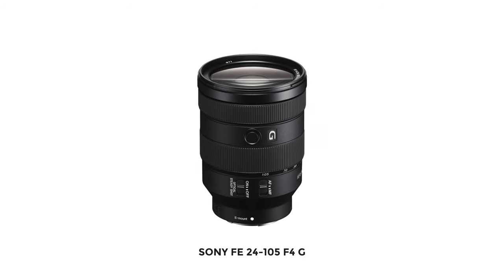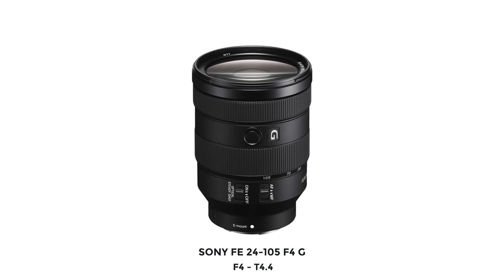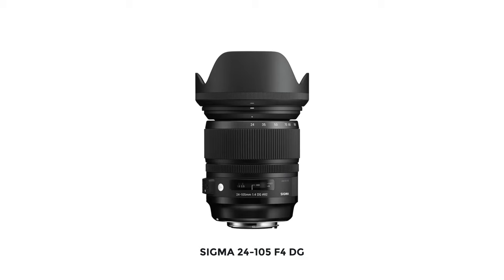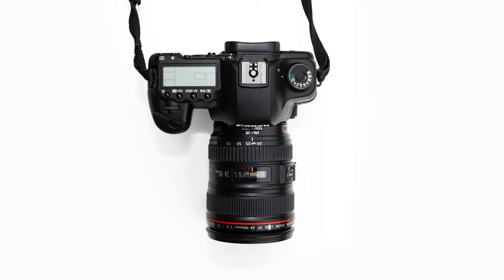For example, the Sony FE 24-105 f4 G has a T-stop of T4.4, whereas the Sigma 24-105 f4 DG has a notably better T-stop value of T4.2. Interestingly, the original Canon 24-105 f4 lens has an abysmal T-stop of T5.1. Think about that — for years and years people were going out and buying that lens expecting it to have the same performance as other f4 lenses, and they weren't getting their money's worth by a long shot.